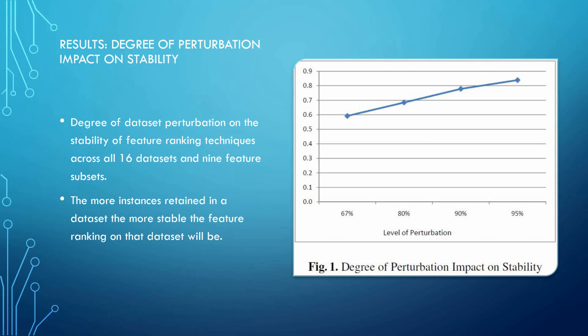The effects of the degree of dataset perturbation on the stability of feature ranking techniques, across all 16 datasets and nine feature subsets, are shown in Figure 1. The more instances retained in the dataset — in other words, the fewer instances deleted from the original dataset — the more stable the feature ranking on that dataset is.